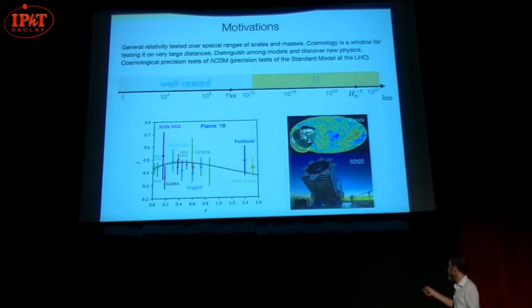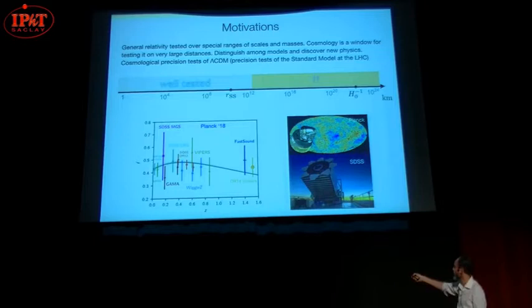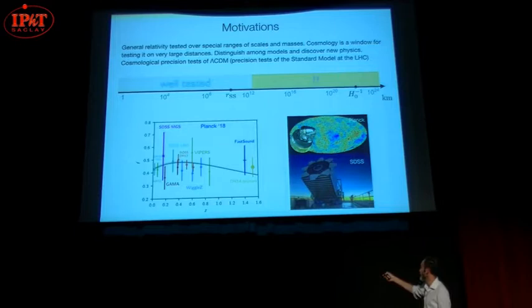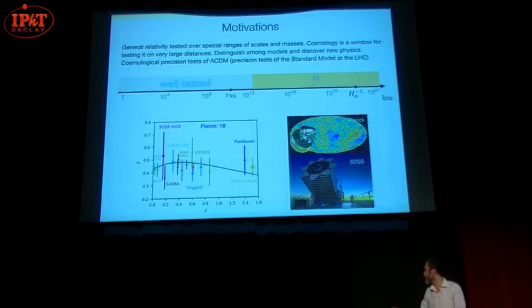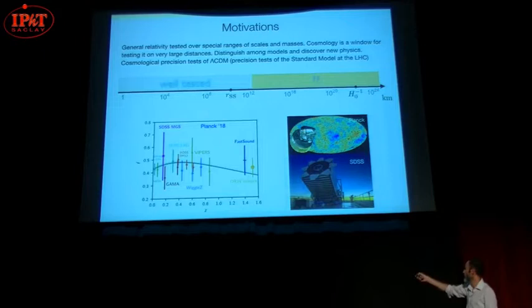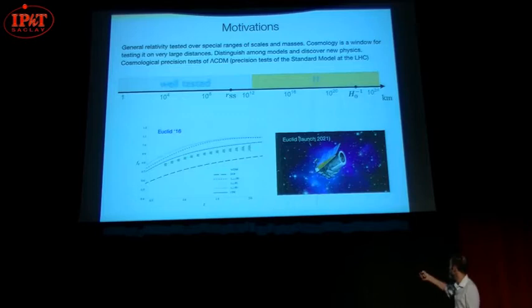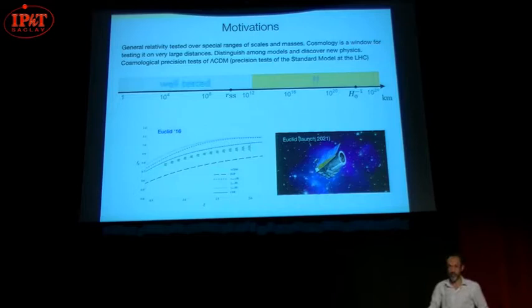Here I am plotting the growth rate of structure in the universe as a function of redshift. The black line is the growth rate in ΛCDM, the standard cosmological model, assuming cosmological parameters measured by the Planck satellite. The data with error bars are measurements from current galaxy surveys — they are compatible with the ΛCDM model measured by Planck. But in the future, for instance with Euclid, which will be launched in 2021, we expect to distinguish between different growth rates predicted by different models of dark energy and modified gravity.